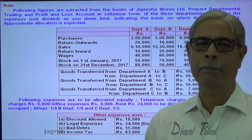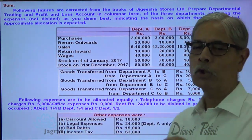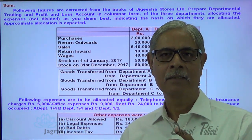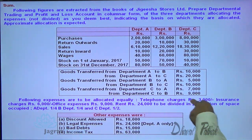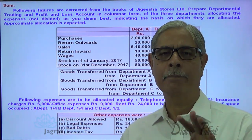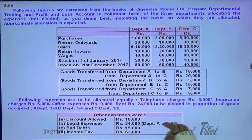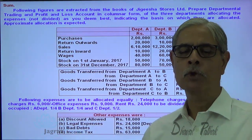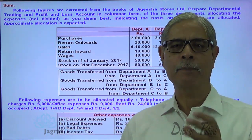The following expenses are allocated equally — these are common expenses, meaning expenses incurred for all departments together. For example, telephone charges of 3,000: management has taken a policy decision that telephone expenses should be distributed equally. Insurance is also distributed equally. Office expenses are also distributed equally — so all three expenses are to be distributed in equal proportion, as decided by management per their policy.